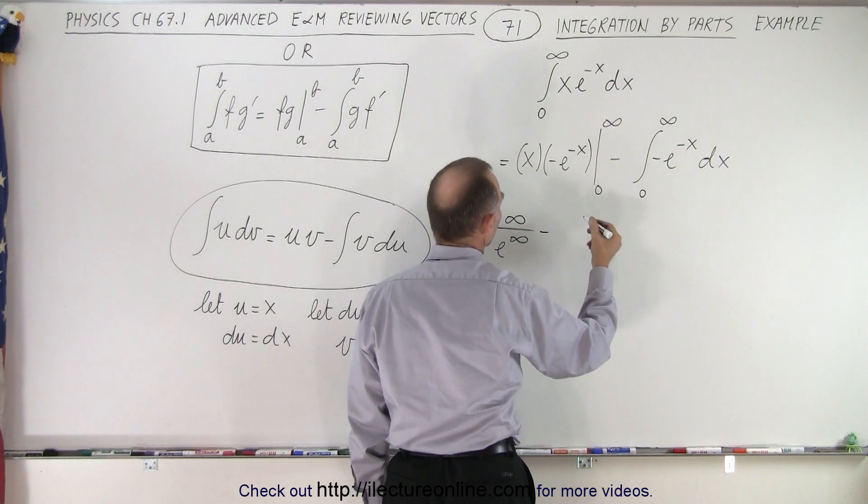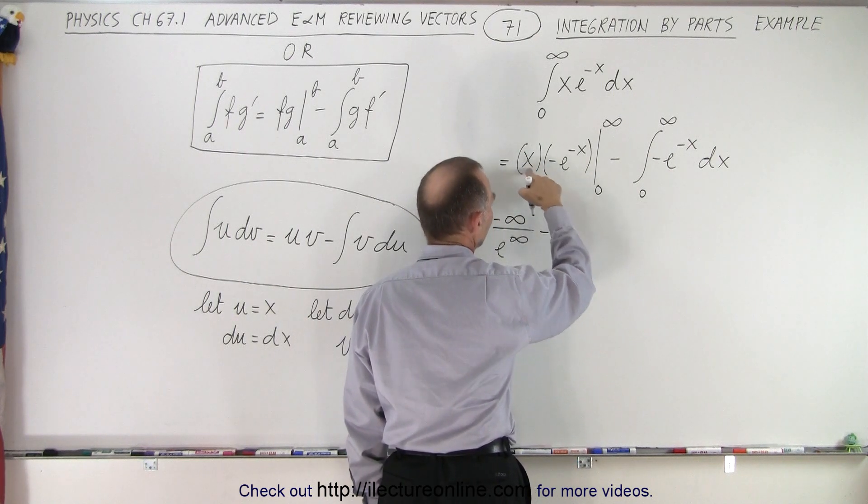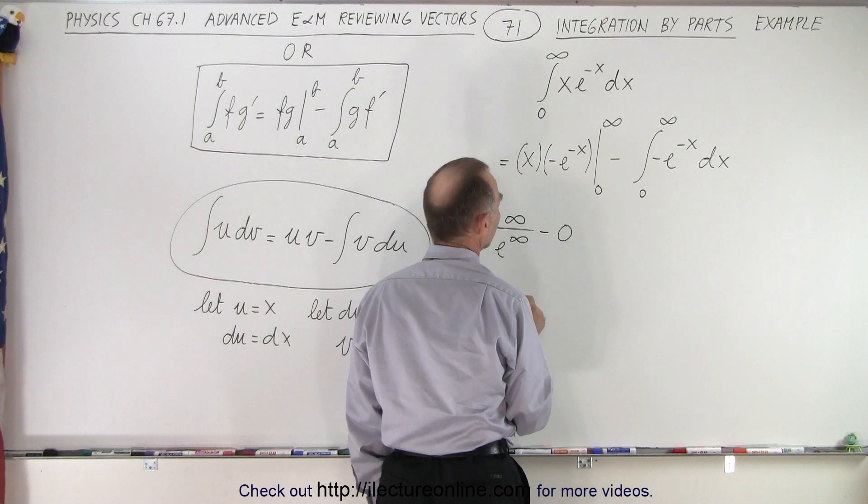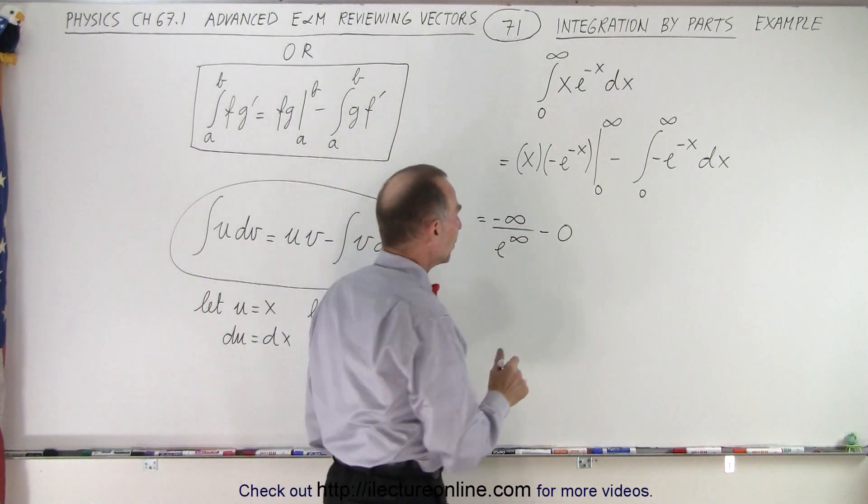Minus when we plug in the lower limit, we get 0 because 0 times, if we let x equal 0, this whole thing just becomes 0. And you may wonder what that's equal to? Well, we'll get to that in just a moment.